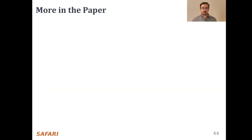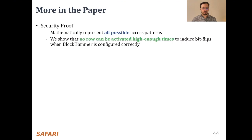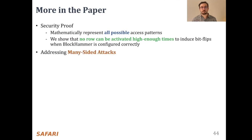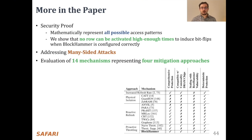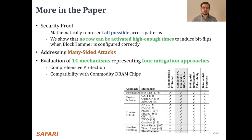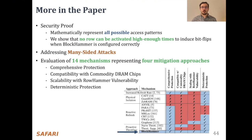We provide more analysis and implementation details in the full paper. First, the paper shares a security proof where we mathematically represent all possible access patterns and show that no row can be activated at a high enough rate to induce bitflips when Block Hammer is configured correctly. Second, the paper explains how Block Hammer addresses many-sided attacks by tuning its thresholds. Third, we evaluate all four high-level row hammer mitigation approaches by analyzing 14 mechanisms from four aspects: comprehensive protection, compatibility with commodity DRAM chips, scalability with worsening row hammer vulnerability, and deterministic protection. We show that Block Hammer is the only mechanism that satisfies all of them.